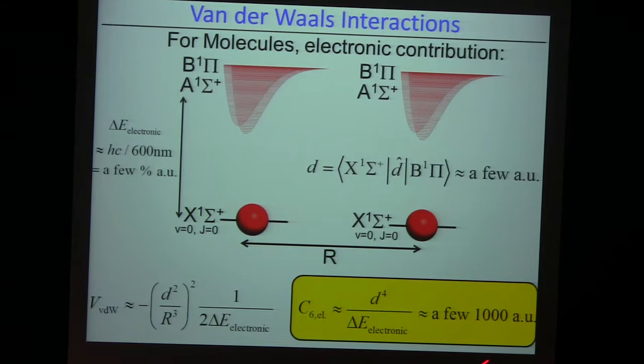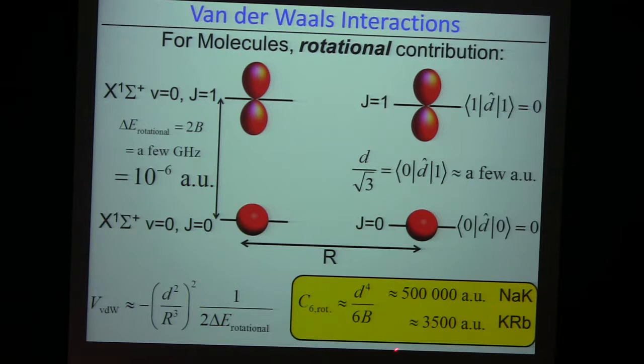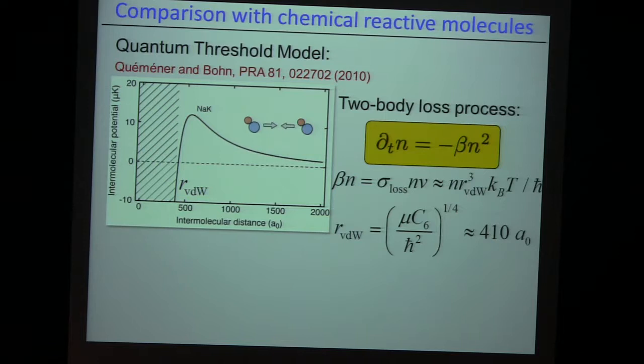One should also think about virtual rotational excitations of these molecules from J equals zero to J equals one — that would be the dominant contribution by far. That energy difference is tiny — on the order of ten to the minus six atomic units. The dipole moment is still strong, on the order of an atomic dipole moment. Plugging things in gives you 500,000 atomic units for sodium-potassium. This is important because we can ask: what if we had chemical reactions? These guys would see each other with a certain probability.